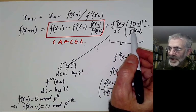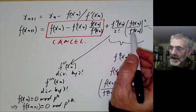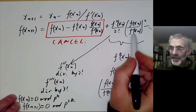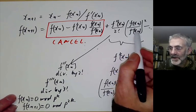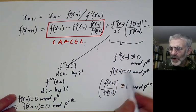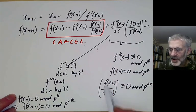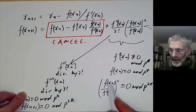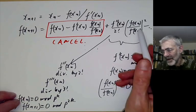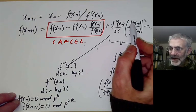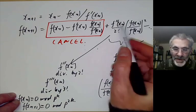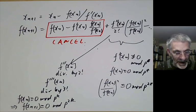There are also variations of Hensel's Lemma where the derivative is zero mod p but non-zero modulo some higher power of p. Then we get a more complicated convergence condition: instead of f being zero modulo p, it must be zero modulo some slightly higher power of p.